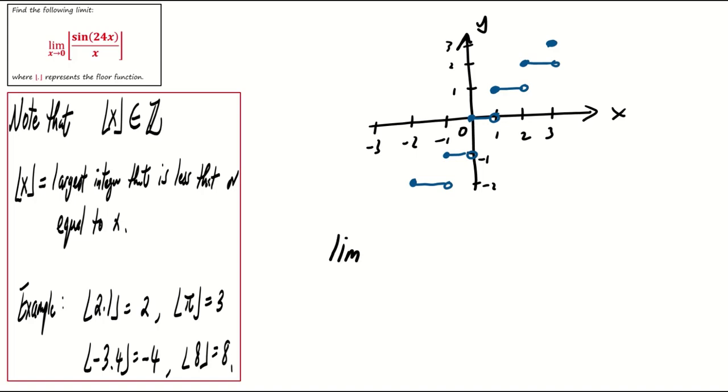This graph helps us understand that the limit of floor of x as x tends to 0 from the right is 0, and from the left is negative 1. Plus, the limit does not exist at 0.